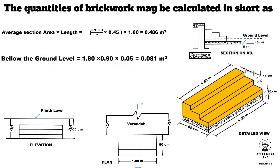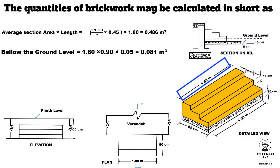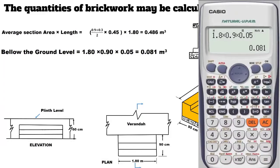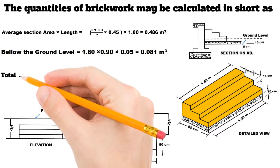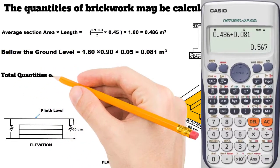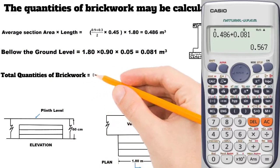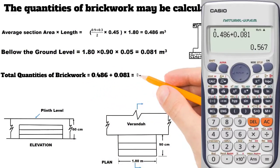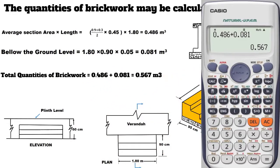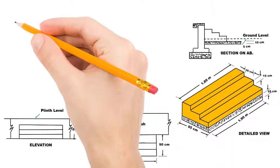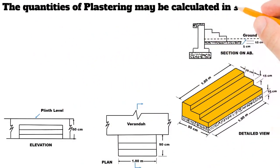For the brickwork below the ground level: length equals 1.80 meter, width equals 0.90 meter, and height or thickness is 5 centimeter or 0.05 meter, giving 0.081 cubic meter. The total quantity of brickwork is 0.486 + 0.081, equal to 0.567 cubic meter.